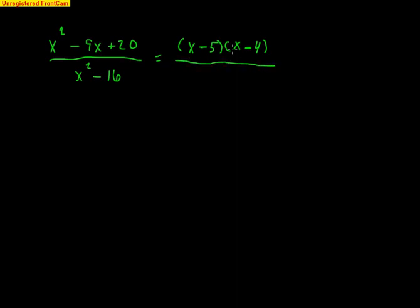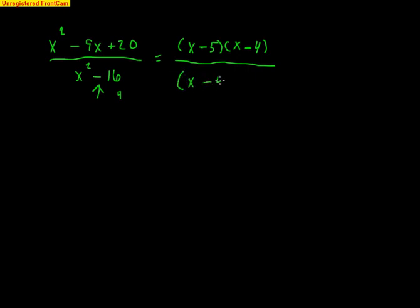This bottom here: right away you should recognize a binomial with the subtraction sign, and 16 is a perfect square — 4 squared is 16 — so this is a difference of perfect squares. I recognize that right away, so I get (x minus 4)(x plus 4).